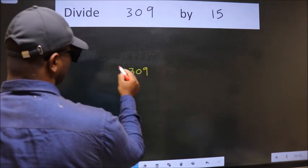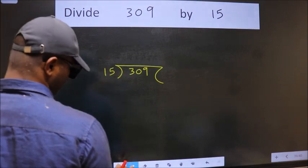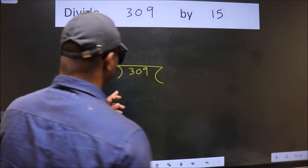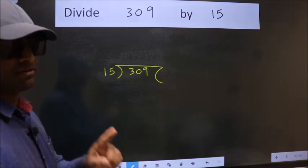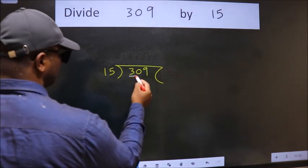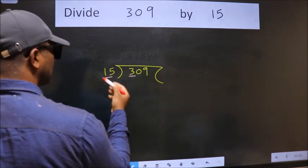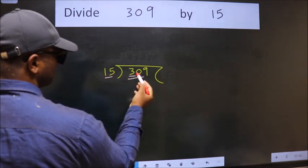309 here. 15 here. This is your step 1. Next, here we have 3. Here 15. 3 is smaller than 15. So we should take 2 numbers, 30.